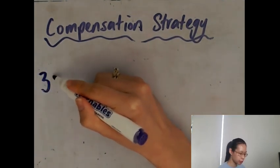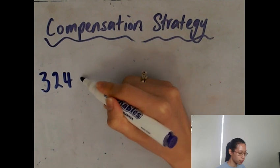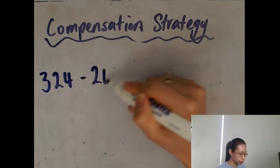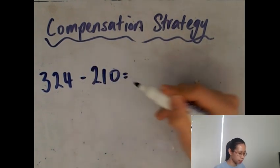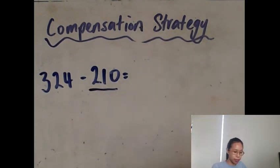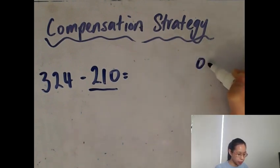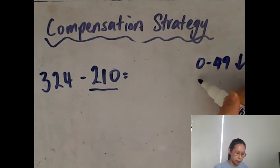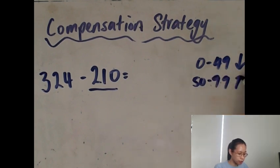So if we have 324 minus 210, we need to know how to round up and down by your hundreds. If you have numbers that are between 0 and 49, then you round down. If you have numbers between 50 to 99, then you round up.